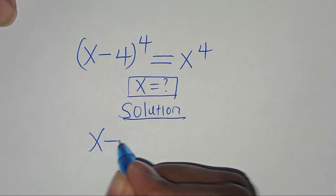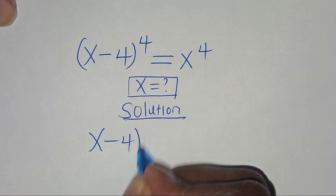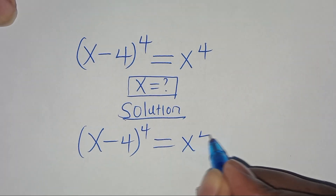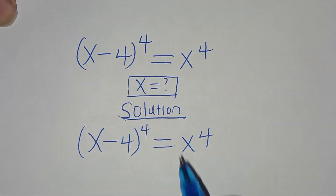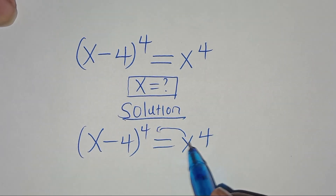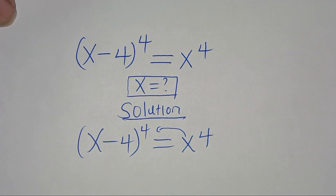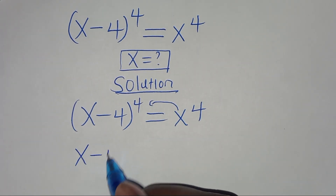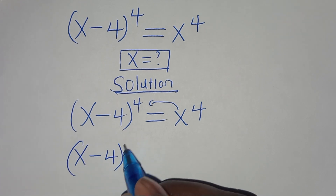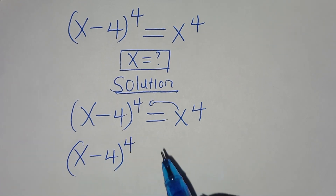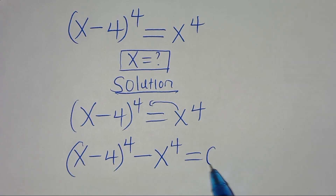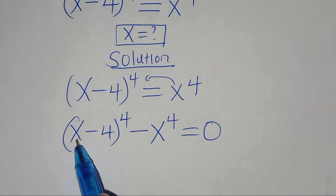We have (x minus 4) raised to power 4 equal to x to power 4. The first step is to take x to power 4 to the left hand side, so we have (x minus 4) raised to power 4 minus x to power 4 equals 0.